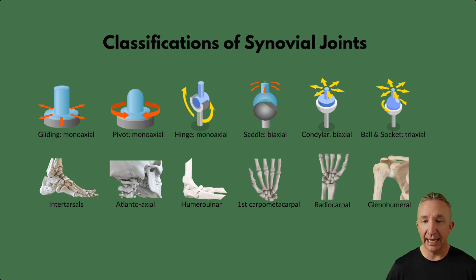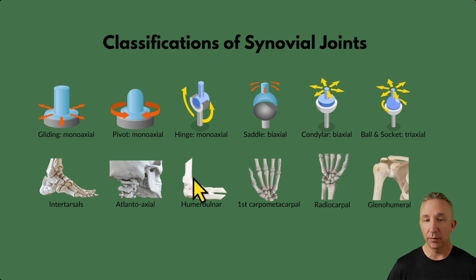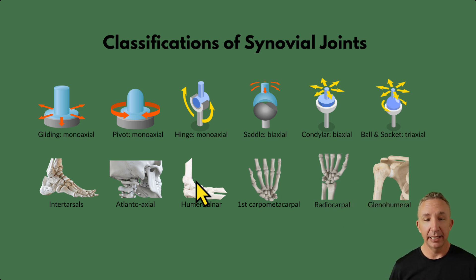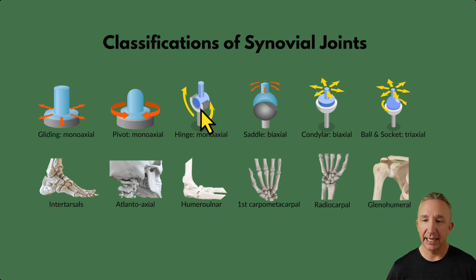A hinge joint — the best example is the elbow joint, the humerus with the ulna. One bone is concave and adjoins the other, creating just one bending movement, so it's also monoaxial. Specifically, this involves the trochlear notch of the ulna articulating within the trochlea of the humerus. You also see hinge joints at the knees and ankles.